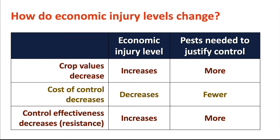For instance, as crop value decreases, the economic injury level will increase, meaning you actually need a higher pest population to justify protecting that less valuable crop. As the cost of control decreases, the economic injury level also decreases — it takes fewer pests to justify putting out that cheaper insecticide. And as control effectiveness decreases, for instance if you have resistance to a given insecticide, the economic injury level will increase, requiring more pests to justify using that less effective control option.